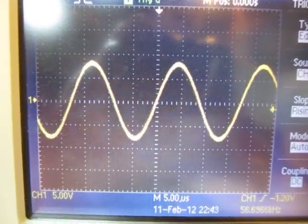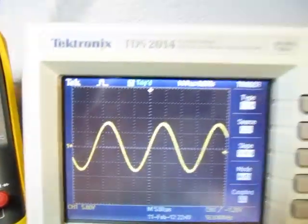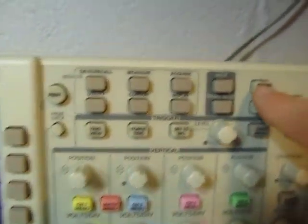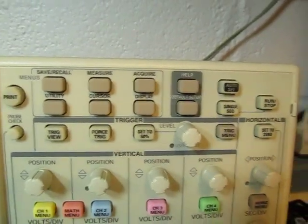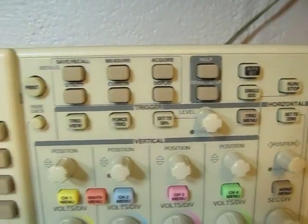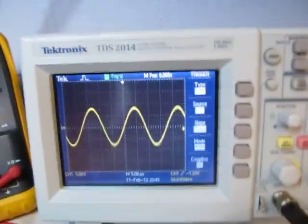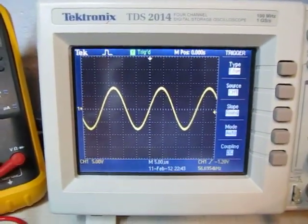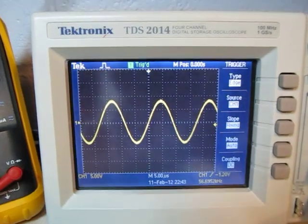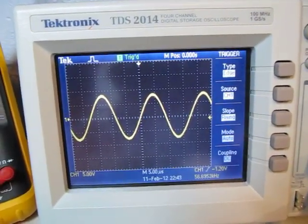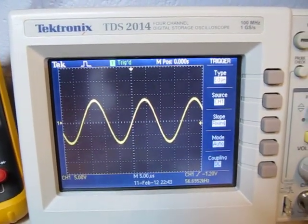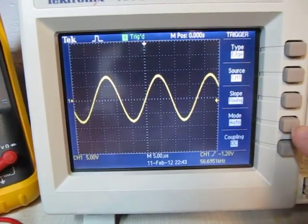So auto triggering is not like an auto set. Sometimes you've got an auto set button here on a scope that can automatically set up a vertical channel and the number of channels and try to set up a trigger level. It's kind of a shortcut way of getting started and getting the scope set up, but it doesn't always work right. But the auto set is not the same thing as the auto mode in the trigger.